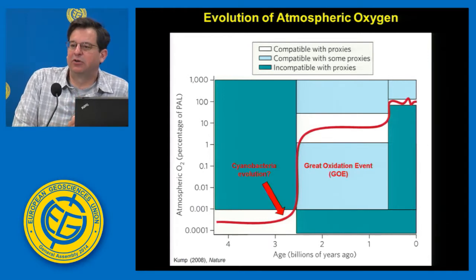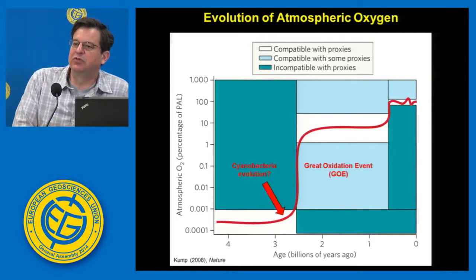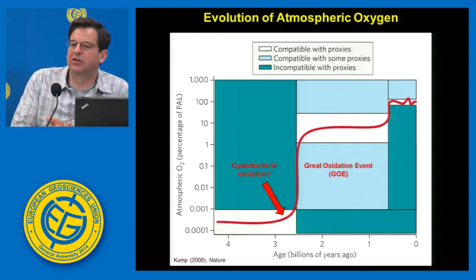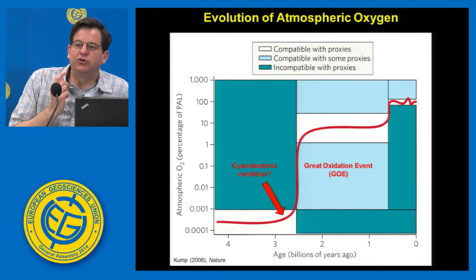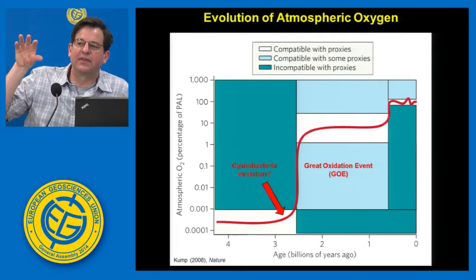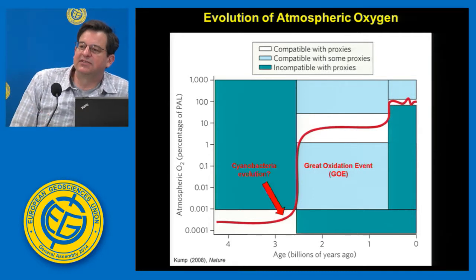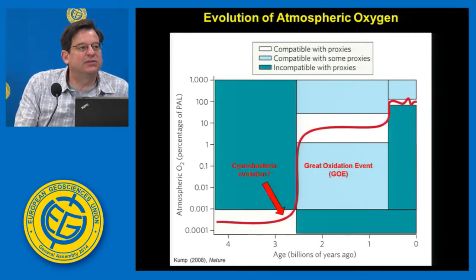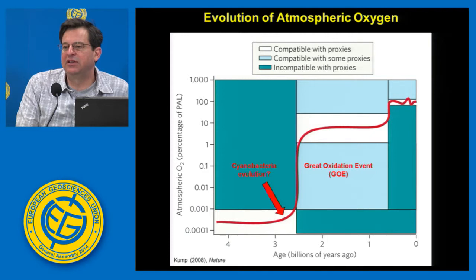One of the interesting things about the great oxidation event is that it represents when we get oxygen in the atmosphere, but we first have to produce the oxygen somewhere. It's generally believed that the things producing the oxygen are cyanobacteria — the blue-green algae, the primary oxygen producers. At 2.5 billion years, they had produced enough oxygen that what they were producing in the oceans was able to get into the atmosphere permanently. That still leaves us with the big question of when cyanobacteria evolved, and there have been estimates all the way from 3.5 billion years ago based on fossils, which many people disagree with.